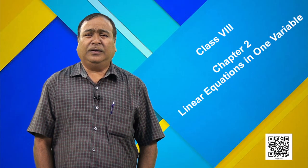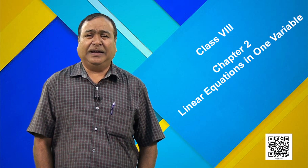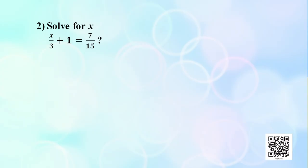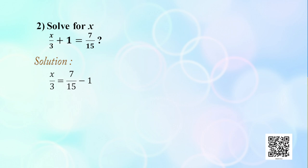Now let us try to solve one more problem. Problem 2: solve for x, x/3 + 1 = 7/15. In the last step we observed that we have to operate certain numbers on both sides. At the same time, if you want to remove a constant, we can transpose it from the left hand side to the right hand side. Note that when transposition happens, the sign changes for addition or subtraction.